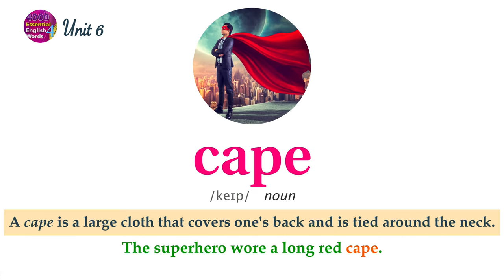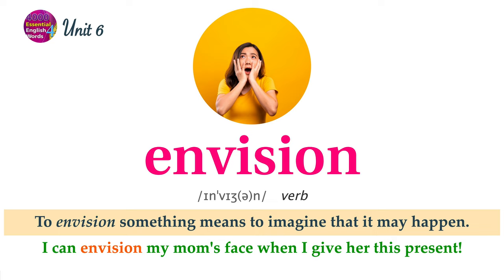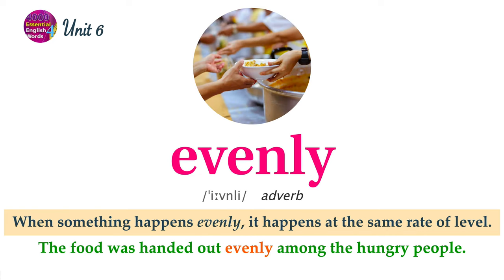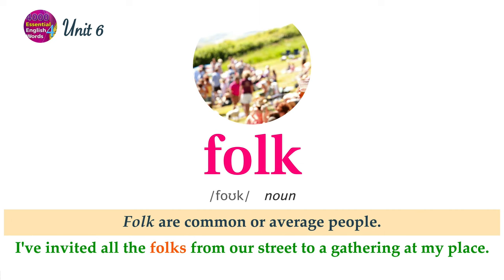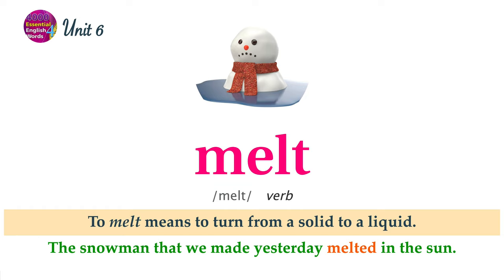A cape is a large cloth that covers one's back and is tied around the neck. The superhero wore a long red cape. To envision something means to imagine that it may happen. I can envision my mom's face when I give her this present. When something happens evenly, it happens at the same rate or level. The food was handed out evenly among the hungry people. Folk are common or average people. I've invited all the folks from our street to a gathering at my place. To melt means to turn from a solid to a liquid. The snowman that we made yesterday melted in the sun.